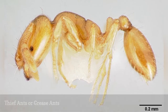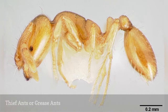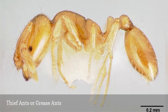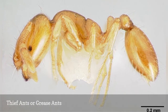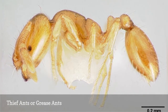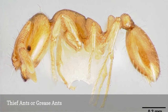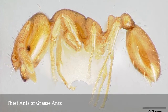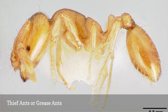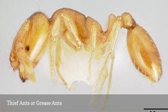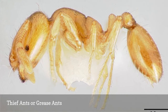Thief ants, or grease ants, that are found to be nesting indoors are best eliminated through baiting. This can be as simple as placing a small amount of greasy bait near the areas in which the ants have been seen. When controlling grease ants,